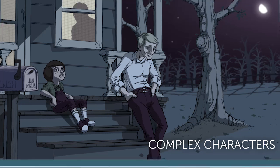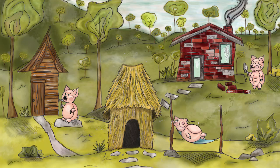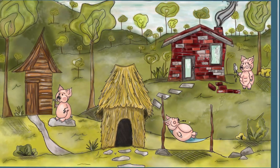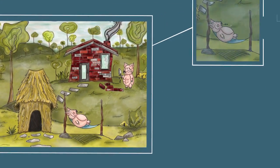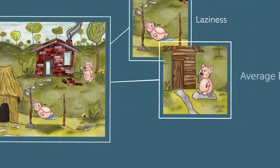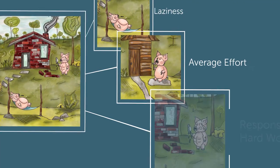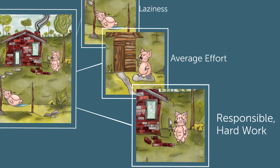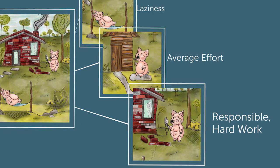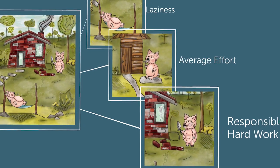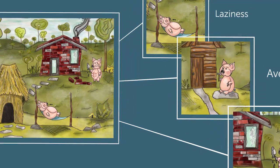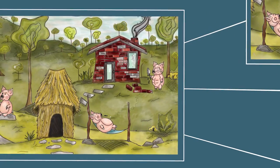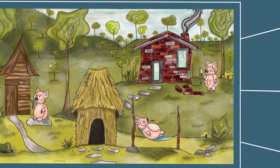Simple characters exist through all literary genres, but are prevalent in children's literature. Examples of simple characters include all three of the little pigs. One little pig represents laziness, another represents average effort, and the third represents responsible hard work. From start to finish, the pigs do not change. The first pig builds a flimsy straw house, the second builds a less flimsy stick house, and the third builds a rock-solid brick house.